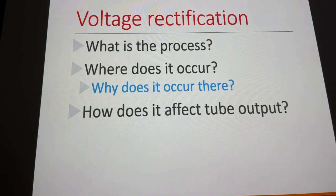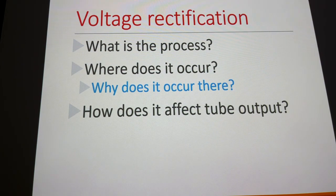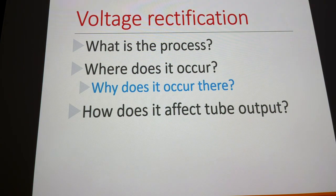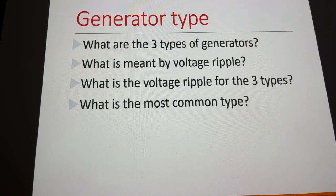Rectification affects tube output by taking all pulses and directing them in one direction across the X-ray tube, rather than alternating back and forth — increasing tube output by approximately a factor of two. The effects on the bremsstrahlung spectrum are similar to an increase in MAS: we're increasing output by a factor of two.